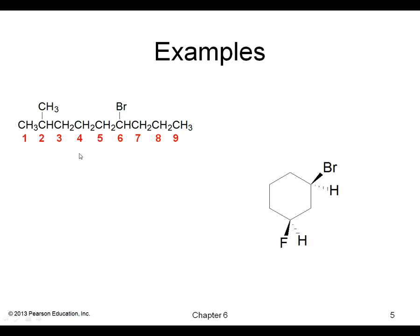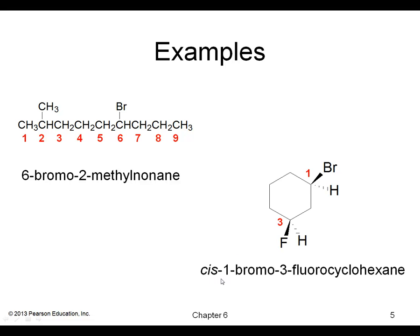Some more examples. Here I can number the parent chain straight across: the bromo is on carbon 6 and the methyl is on carbon 2. Remember, we put substituents in alphabetical order, so I'll name the bromo first even though it has a higher number — the numbers have nothing to do with the ordering of substituents. Down here we have bromo and fluoro that are 1,3-related and are shown to be cis, giving us cis-1-bromo-3-fluorocyclohexane.